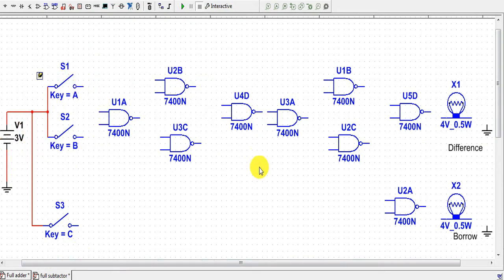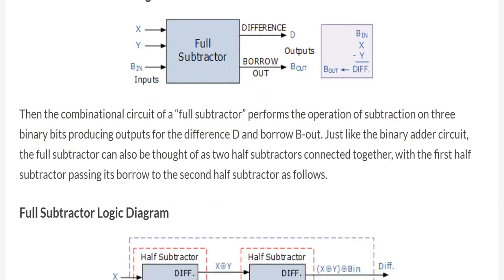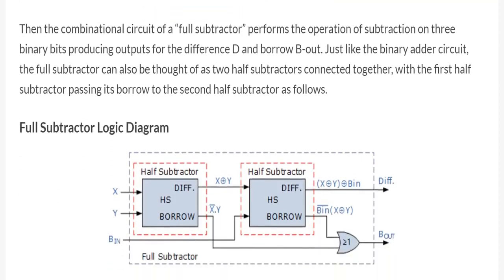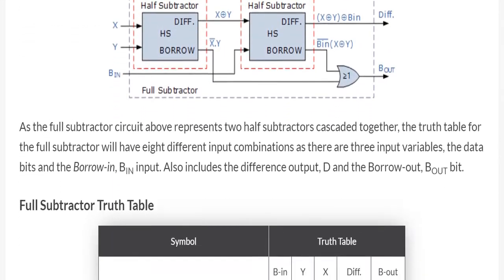Let's explore more on the full subtractor. A full subtractor is a combinational circuit that performs the operation of subtraction on three binary bits and gives the output in the form of difference and borrow. Basically it has three inputs and two outputs, and we can realize this full subtractor using two half subtractors.